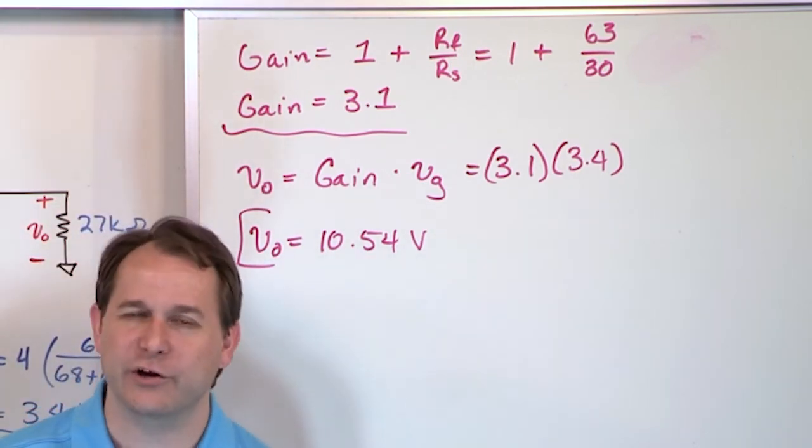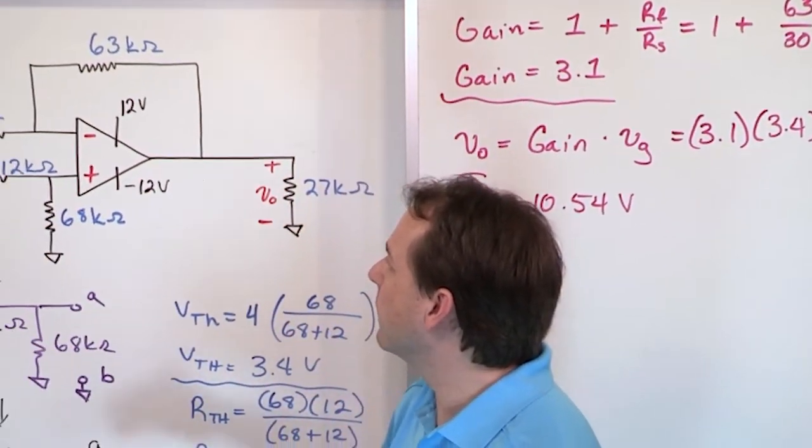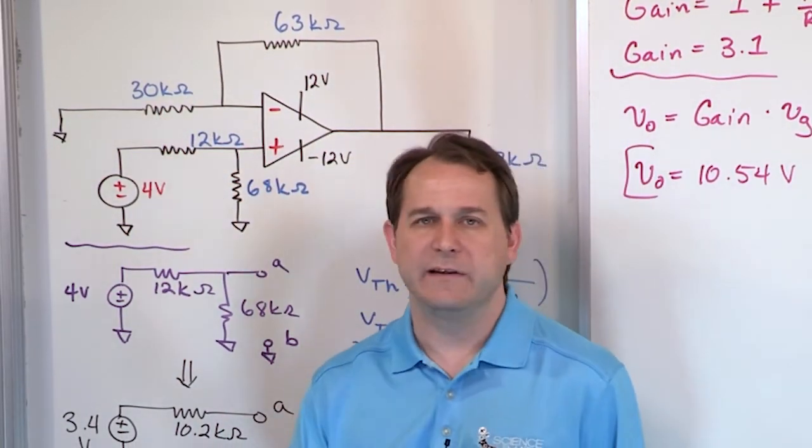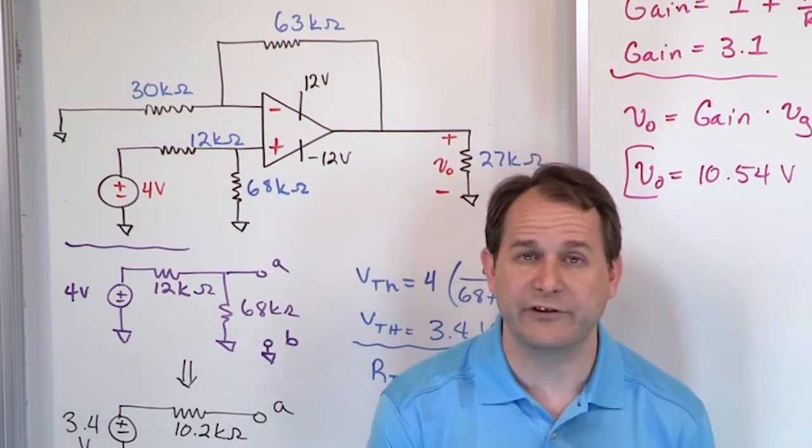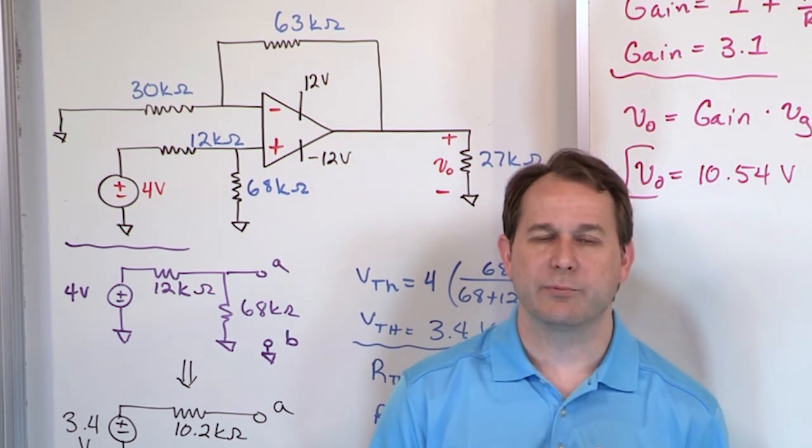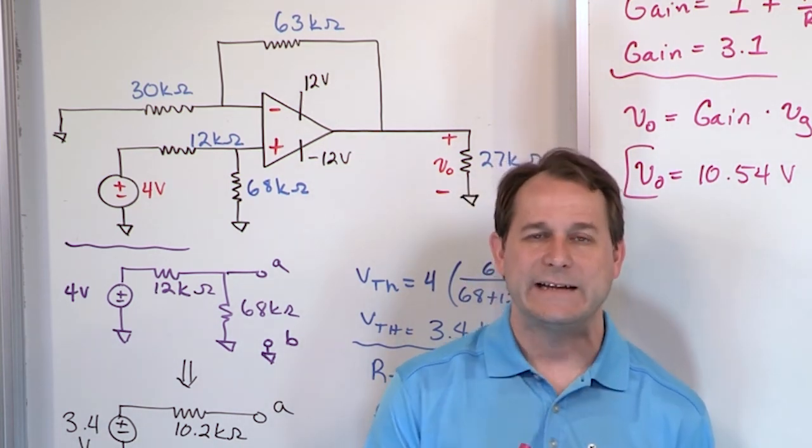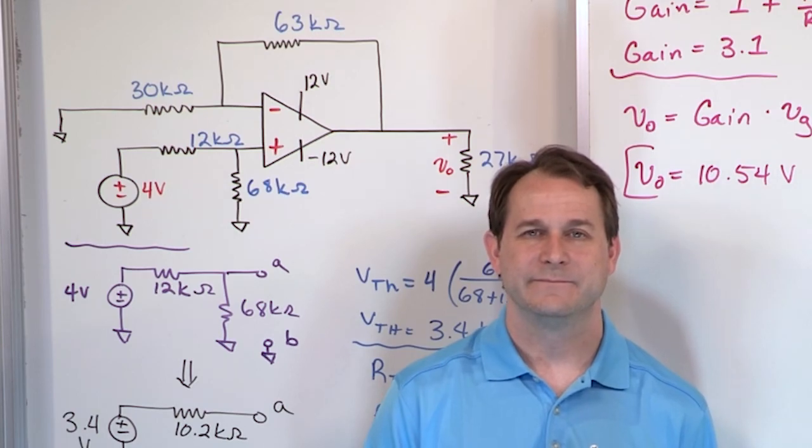So again, pretty cookie cutter once you understand the process. Recognize this is something you can do a Thevenin equivalent for, calculate the gain, and then these problems become very similar. Now, make sure you can understand this one following on to the next problem where we're going to do a non-inverting problem that's going to make you think a little bit more about how to get to the answer. Thank you.